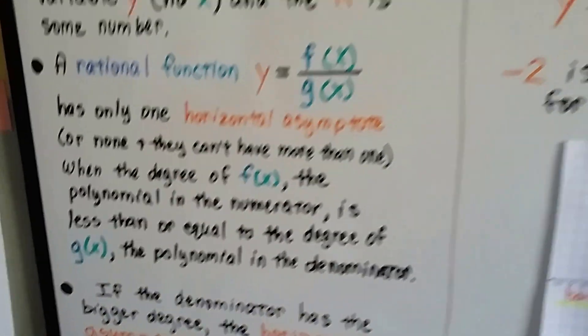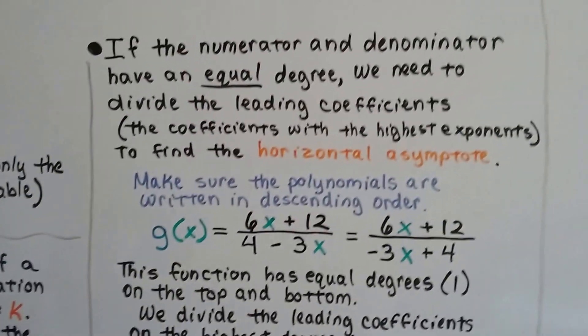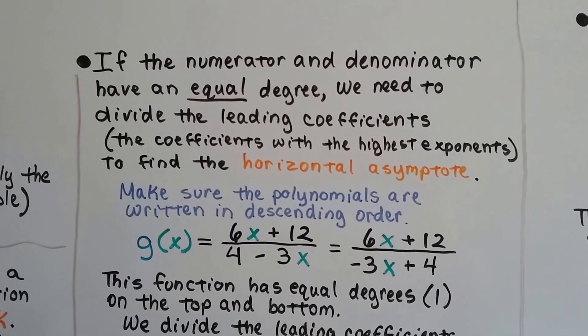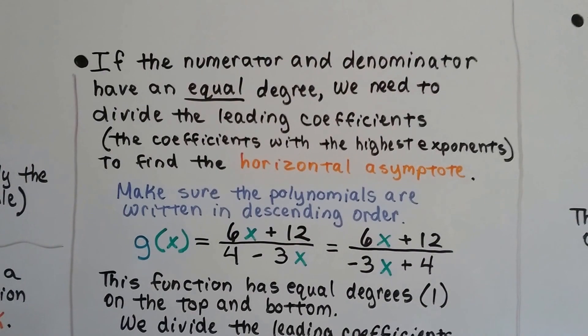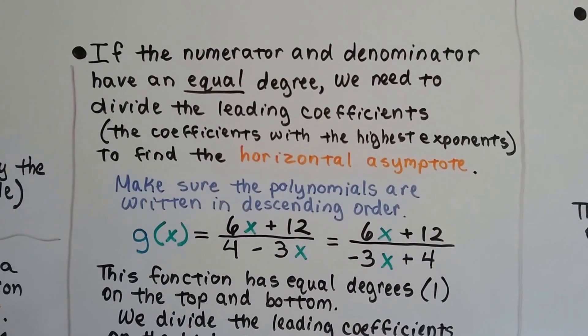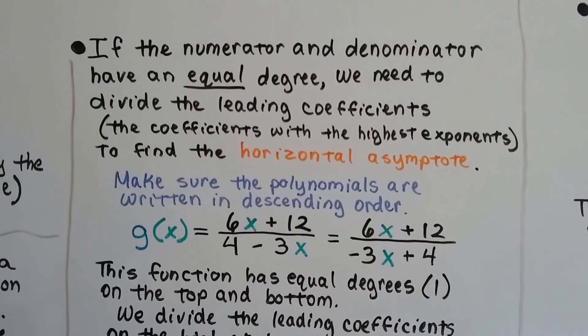Now this is really confusing. Stick with me, okay? If the numerator and denominator have an equal degree, we need to divide the leading coefficients, the coefficients with the highest exponents, to find the horizontal asymptote. We have to make sure that they're written in descending order.